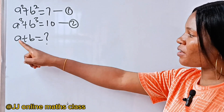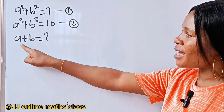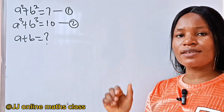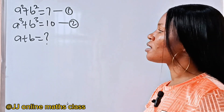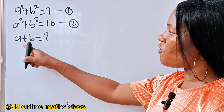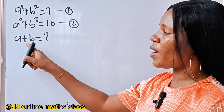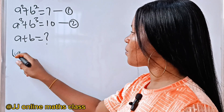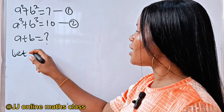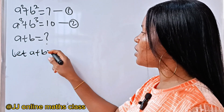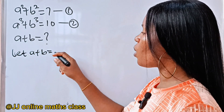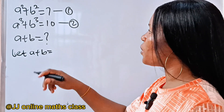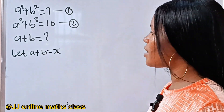When you are asked to find the value of just a plus b without any exponent, this is how you solve it. So let's solve for a and b, and we do that by squaring this. First, let a plus b equal to x.